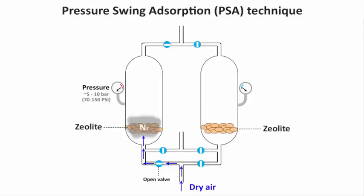Since we don't need nitrogen, the unwanted nitrogen gas is absorbed by the zeolite as pressure builds up and it settles at the surface of the tank. When the first tank is almost full, the nitrogen absorbed settles down at the bed of the vessel and is later released into the atmosphere or caught for other purposes through a valve. When the first tank is full, the pressurized oxygen is collected through an outlet.